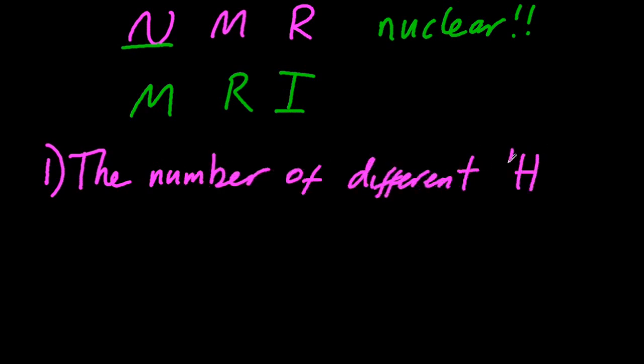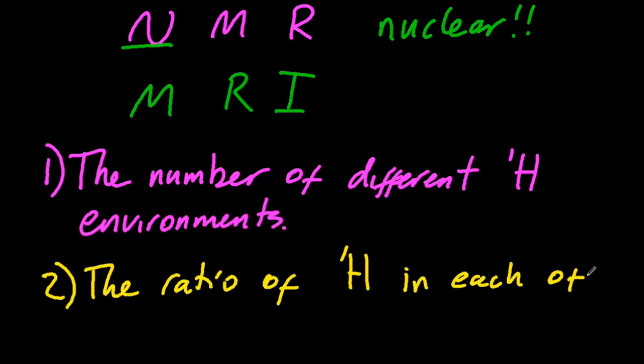So an NMR will measure the number of different H1 environments in your molecule and it will also measure the ratio of H1s in each of these environments. That sounds confusing but let me explain.